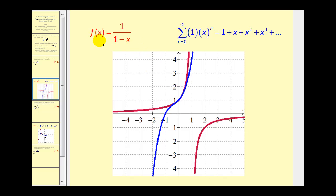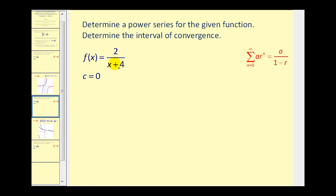A lot of times the function will not be in this exact form, so we have to manipulate the function to make it fit the formula for the sum of an infinite geometric series. For example, this next function does not fit the form of a divided by one minus r in its current form, so we have to make it fit. The denominator must be in the form of one minus r, so we have to rewrite this so that we're subtracting x.